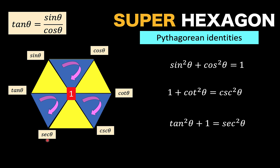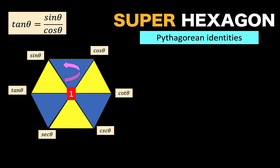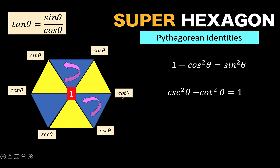Reversing the arrows to counterclockwise direction generates subtraction forms of the Pythagorean identities: one minus cosine squared theta equals sine squared theta; cosecant squared theta minus cotangent squared theta equals one; and secant squared theta minus one equals tangent squared theta. So far we have generated more than 30 trigonometric identities without memorizing any of them.